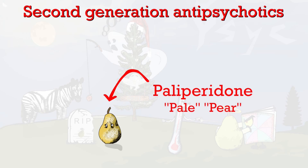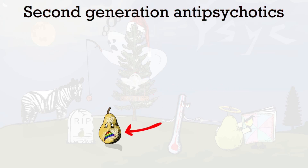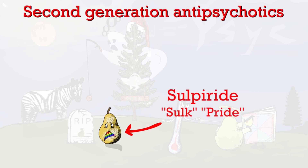The visitor beside the tombstone is a pale pear — 'pale pear' represents paliperidone. You may notice this character is sulking and has what appears to be the colors of the pride flag in his mouth. This represents two antipsychotics: 'sulk pride' represents sulpiride and also amisulpride — they sound quite similar.